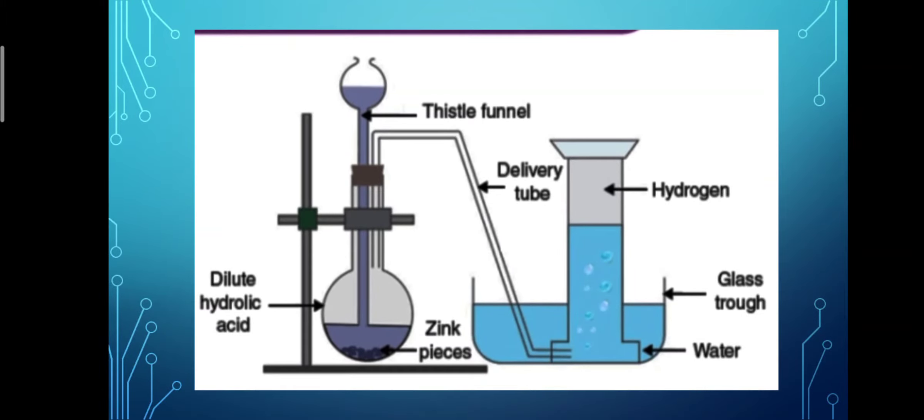Dilute hydrochloric acid is poured with the help of the thistle funnel. When granulated zinc or zinc pieces react with dilute hydrochloric acid, hydrogen gas is produced, which is passed through delivery tube into gas jar, which is inverted over water trough filled with water.